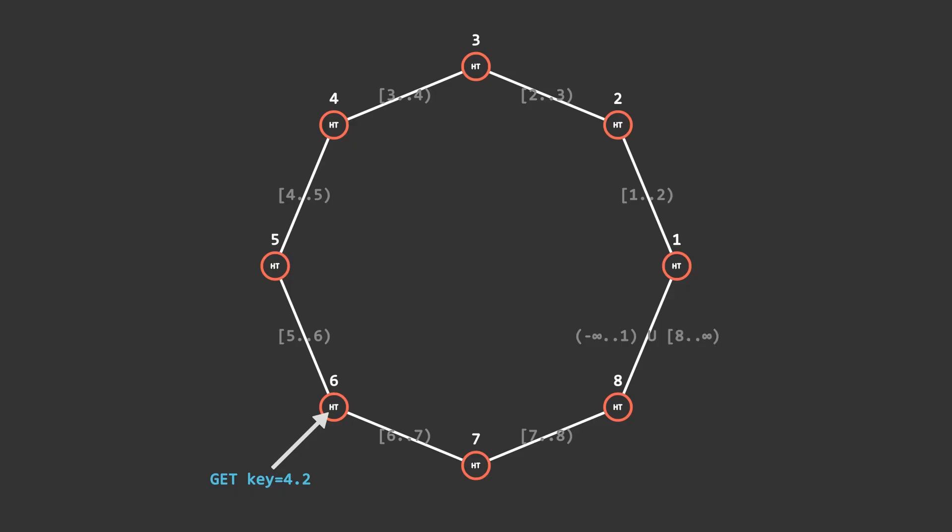Now back to the example. Server 6 sees the key is not in its range. More specifically, it's less than it. So that means we should send the request to the neighboring server with the key that is less than the current. So we follow the edge to server 5.